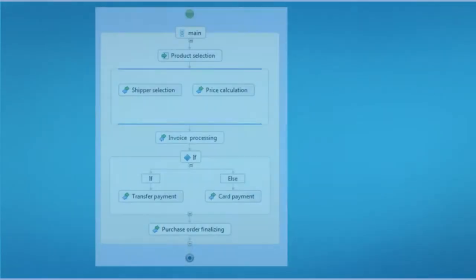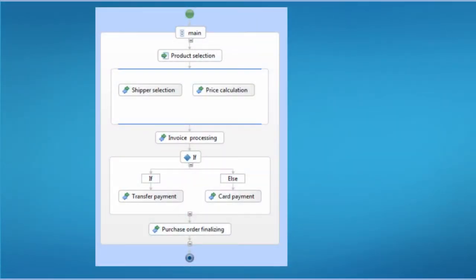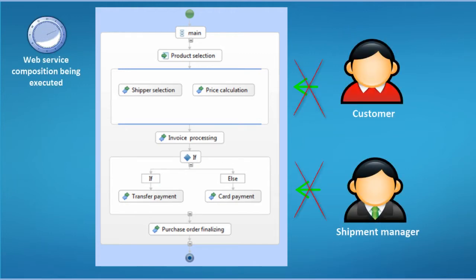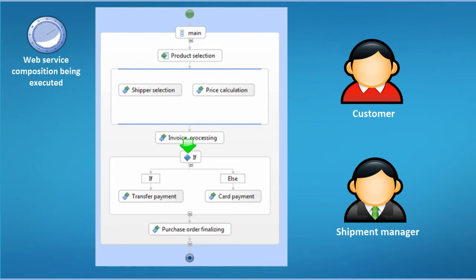This language expresses the web service composition process in a fully automated way. Users are not able to interact with the web services until the end of the process execution. For example, a manager is not able to manually select a shipper, a customer is not able to choose a product mode, view the intermediary price, or cancel the process execution.